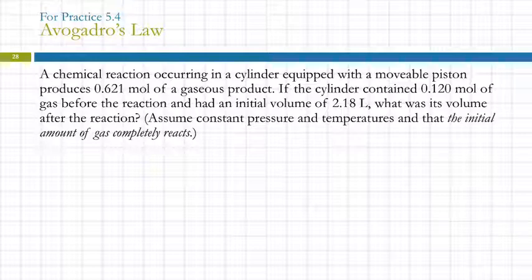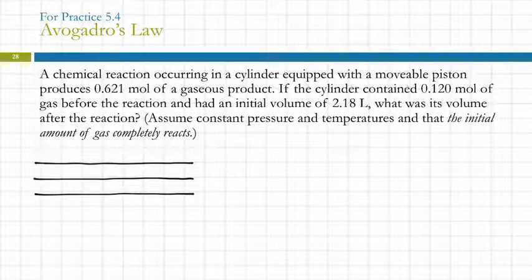So we can do problems using Avogadro's law. The chemical reaction occurring in a cylinder equipped with a movable piston produces 0.621 moles of a gaseous product. If the cylinder contained 0.120 moles of gas before the reaction and had an initial volume of 2.18 liters, what was its volume after the reaction? Assume constant pressure and temperatures and that the initial amount of gas completely reacts. Lots of words. There's only three numbers in there, though. And the numbers are important, so let's pull those out.